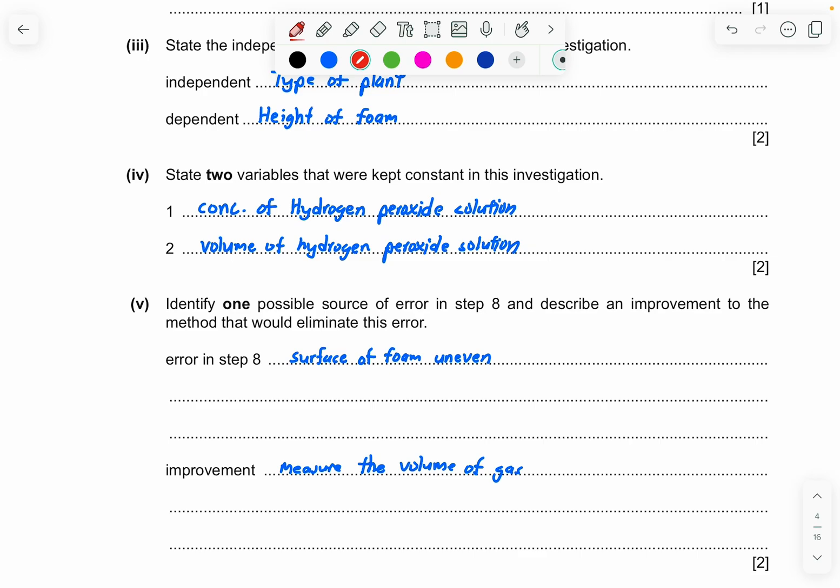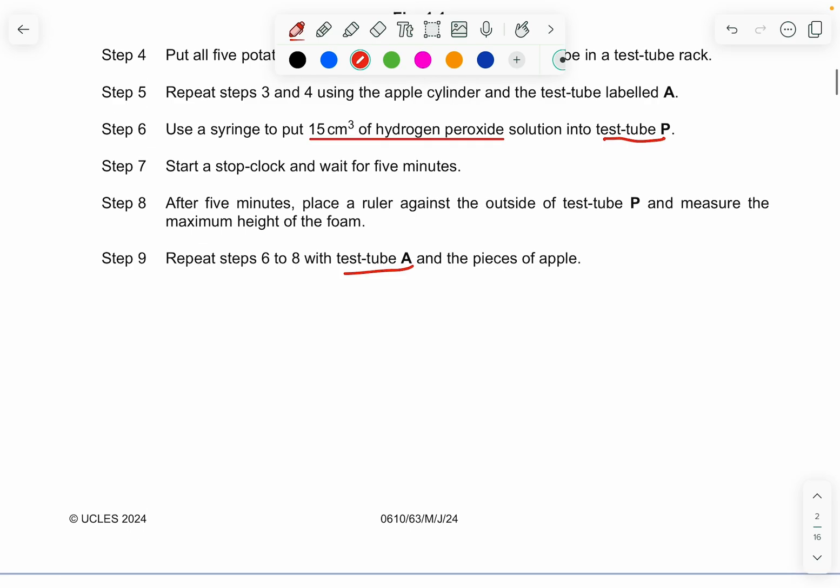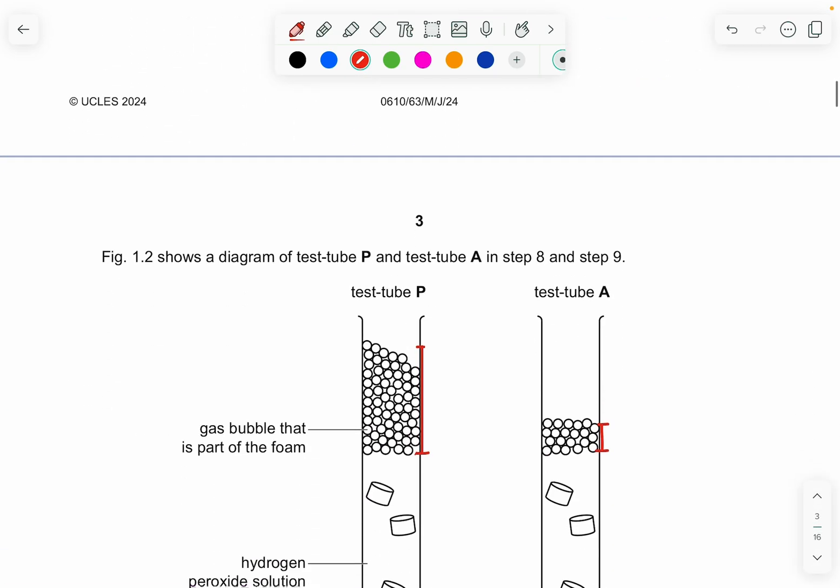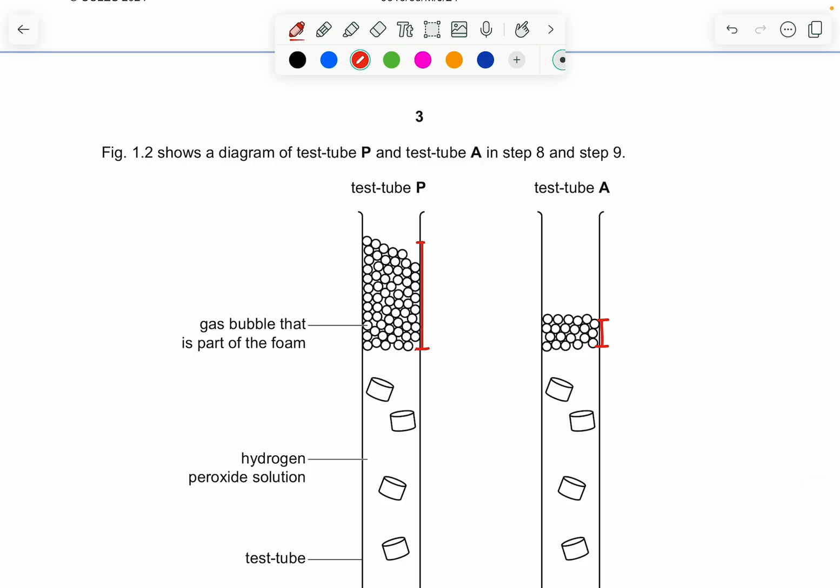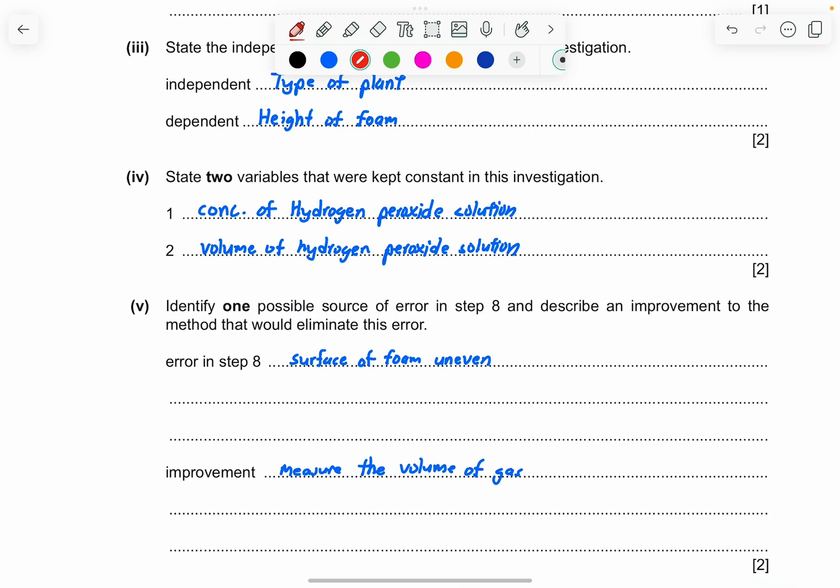So part five, identify one possible source of error in step eight, and describe an improvement to the method that will eliminate this error. So error in step eight, you can see that in step eight, they mentioned that we place a ruler against the outside and measure the maximum height of the foam. The problem is that every height is not constant. You can see that it's not the same. So you can mention that the surface of the foam is uneven. And what is the improvement? We can measure the volume of the gas. And how can we measure the volume of the gas? We can use a gas syringe. Or you can submerge underwater, which you can use it as a displacement method, a water displacement method.